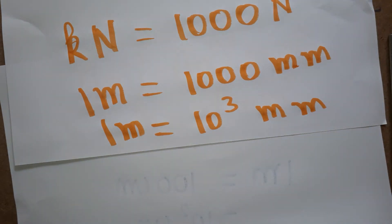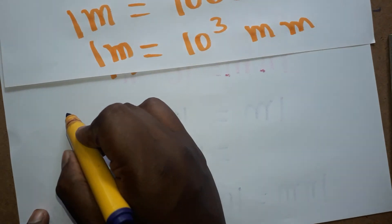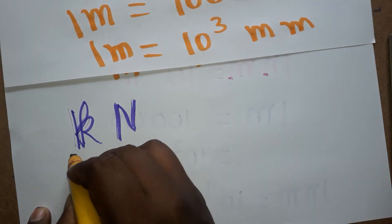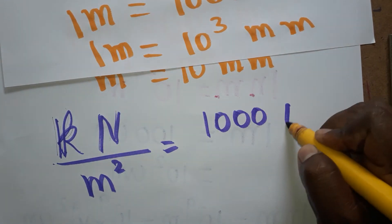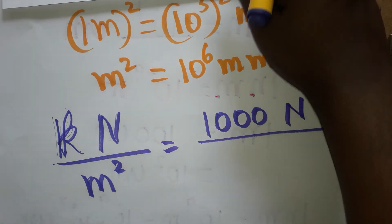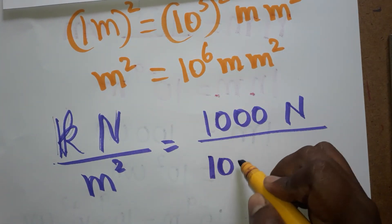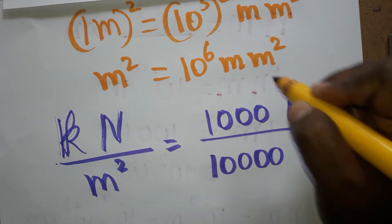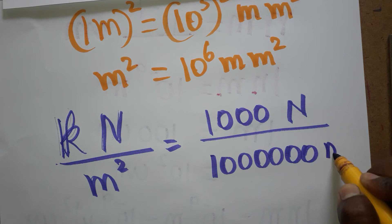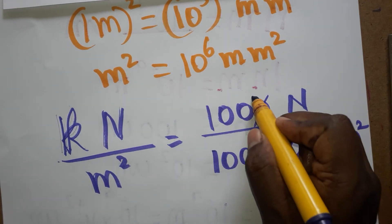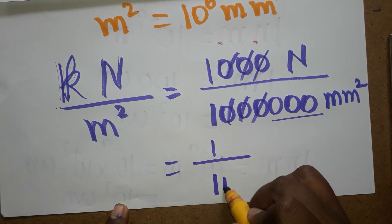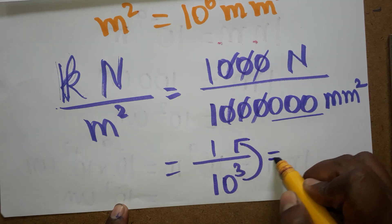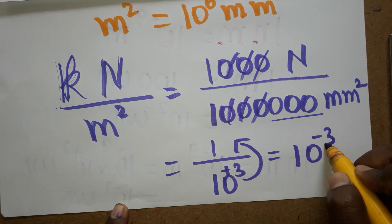Now we convert the actual unit. 1 kilo Newton per meter square: kilo Newton converts to 1000 Newton, which is 10 power 3. And meter square is 10 power 6 millimeter square. So we have 10 power 3 in the numerator and 10 power 6 in the denominator. 10 power 6 minus 10 power 3 gives 10 power 3 remaining in the denominator.